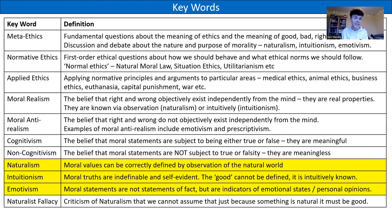This reduces ethics to personal opinions and preferences. We then have two other contrasting terms: cognitivism and non-cognitivism. Cognitivism is the belief that moral statements are subject to being either true or false — they are meaningful. Whereas non-cognitivism is the belief that moral statements are not subject to truth or falsity — they are meaningless. That's what an emotivist would believe. We have naturalism, intuitionism and emotivism highlighted as our three approaches to meta-ethics.